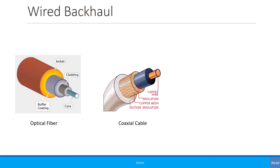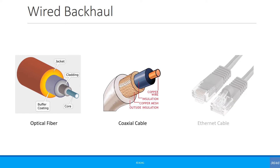We also have copper cables, which are still being used, especially in 3G networks. Coaxial cable gives good data rates, and even in some small cell deployments we can use coaxial cables to provide reasonable data rates. We can also have Ethernet cables — whether carrier or consumer Ethernet — used in small cell backhaul, as long as it provides reasonable data rates.